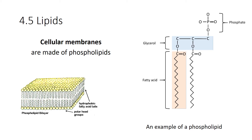Let's talk about cellular membranes. Every single cell on this planet is surrounded by a membrane, and the membrane-bound organelles inside our cells also have cellular membranes. They're all made up of something called a phospholipid, which has a phosphate group and fatty acid tails. The phosphate group at the top is hydrophilic, whereas the fatty acid tails are hydrophobic. That means the outside of a membrane is hydrophilic and easily interacts with water, and the interior is hydrophobic.